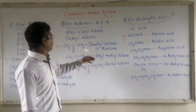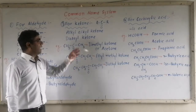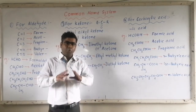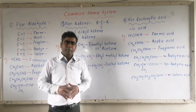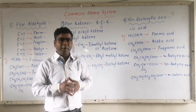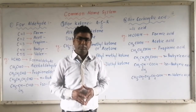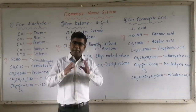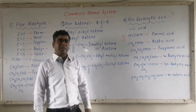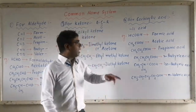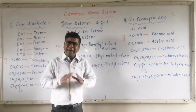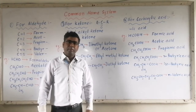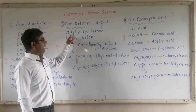Now let us move to the third functional group, that is ketone, having the general representation R-CO-R. To name an organic compound having a ketone group as the functional group according to the common name system: the R part is treated as alkyl, the other R part is treated as alkyl, and the C=O group is termed 'ketone.' So if R and R' are dissimilar — if they are different — then the common name for the ketone will be alkyl alkyl ketone.